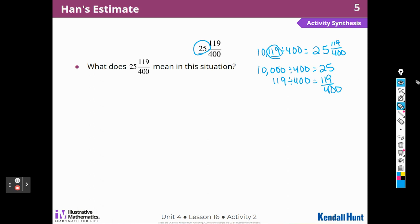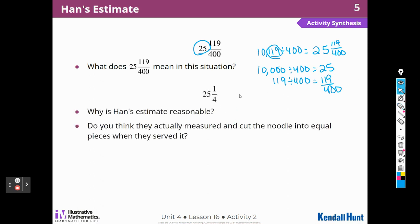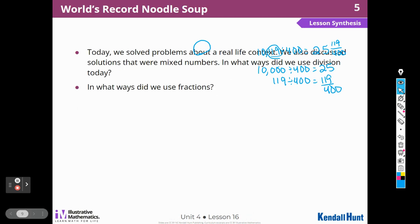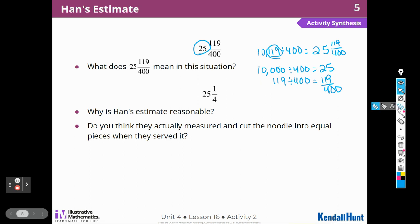Each person gets 25 feet of the noodle and then 119 feet will be left over to be divided equally by 400 people. Why is Han's estimate reasonable? Do you think they actually measured and cut the noodle into equal pieces when they served it? We've already talked about why this is reasonable because 119 over 400 is close to 100 over 400. And remember, we talked about we can reduce that to one fourth. I really don't think, I would say no, I don't think that they actually measured and cut each noodle. That would be really a lot of work, right? I think it would take too long and be too difficult.